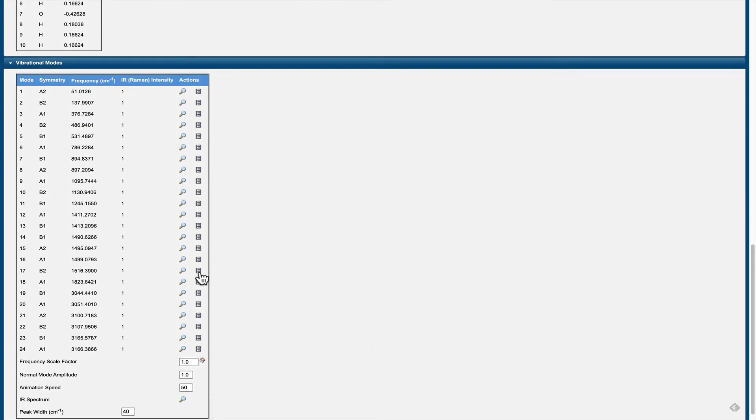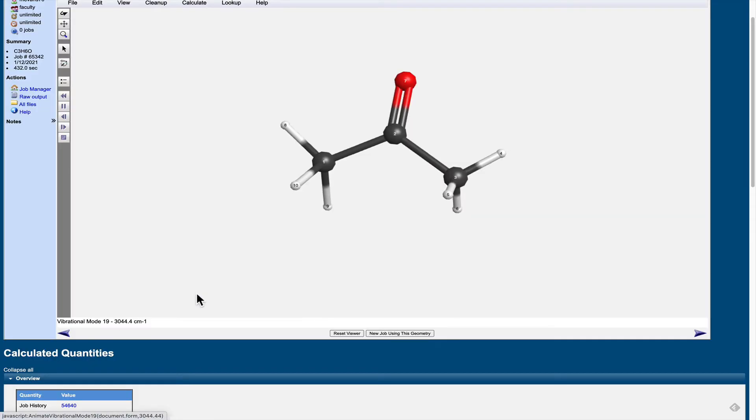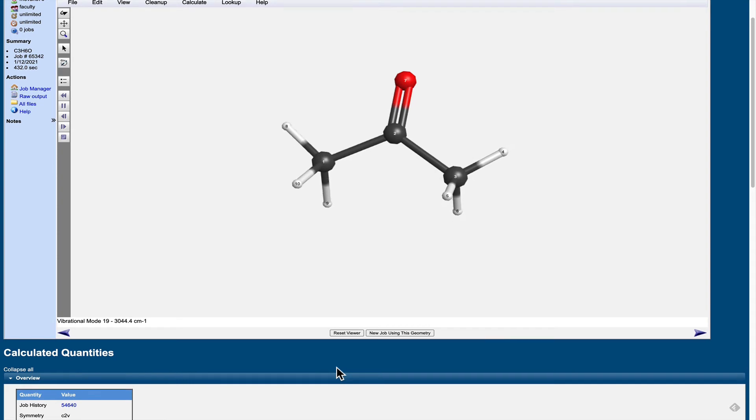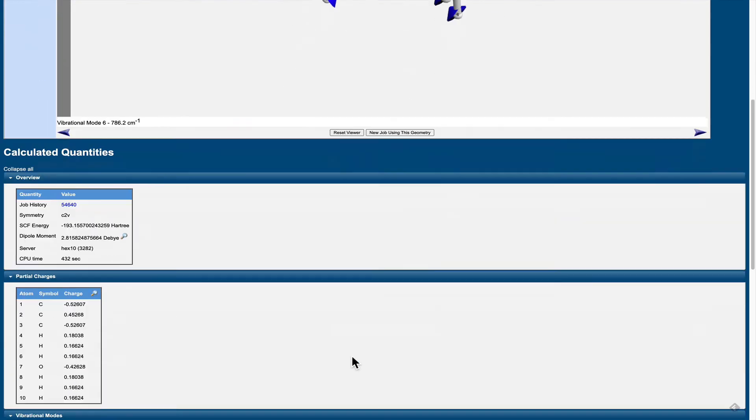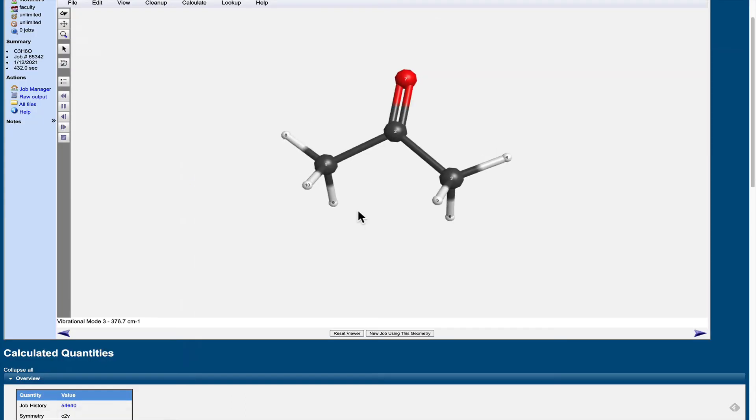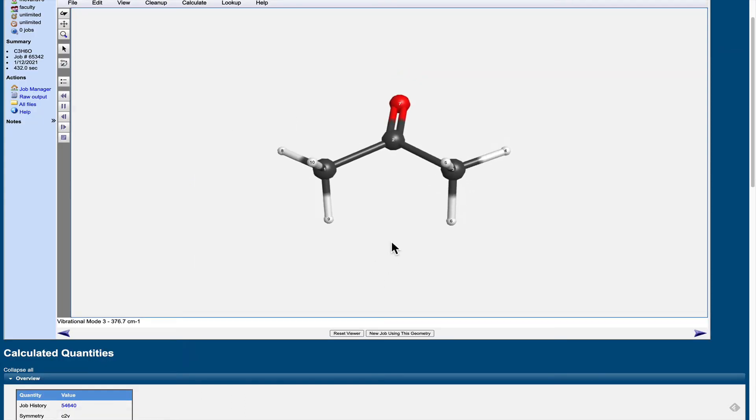We can look at other vibrations. For example, CH vibrations, CH stretching vibrations at higher energy, around 3000 wavenumbers. These should be familiar from prior studies of infrared spectroscopy. And at lower energies, we get bending, wagging vibrations, things of this type that involve subtle motions of the entire molecular framework.